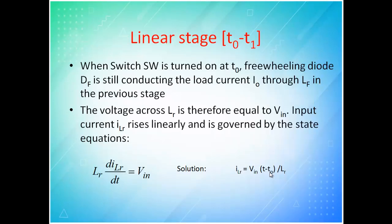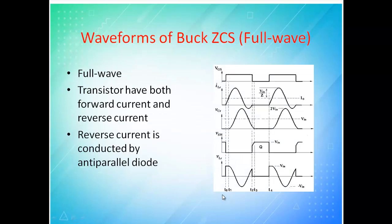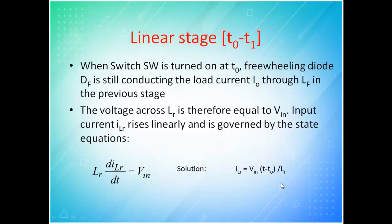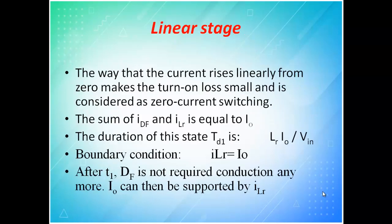The linear stage spans t0 to t1, resonance is t1 to t2, then t2 to t3, and t3 to t4. When the switch is turned on at t=0, the freewheeling diode Df is still conducting and load current i0 flows through Lf. The voltage across Lr equals Vin, so the input current iLr rises linearly, governed by the state equation Lr × (diLr/dt). This linear rise from zero makes the turn-on loss small and is considered zero current switching.